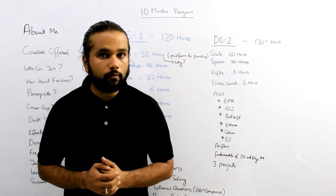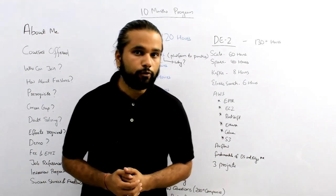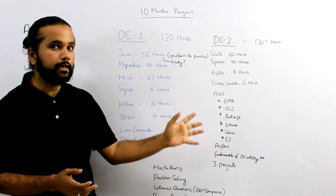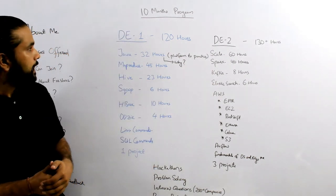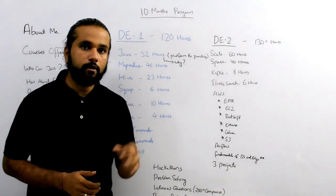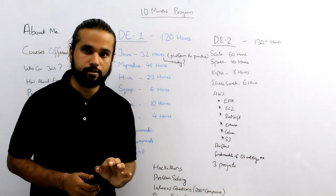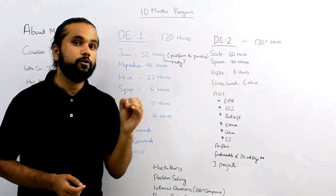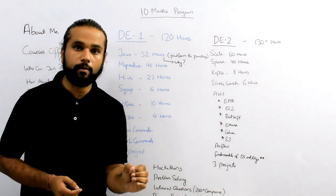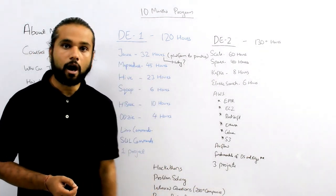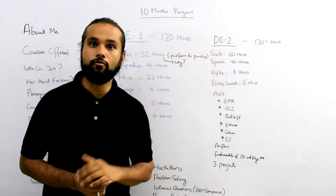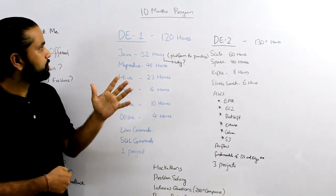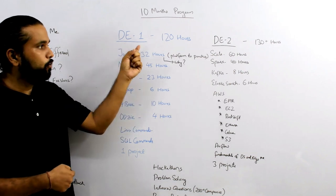Let me explain the program we have for you. We have an exclusive 10 months program, and you won't find this anywhere else. Our 10 month program is designed so that even someone with no programming experience can master data engineering. It could take around 250 hours. We've divided this course into two parts: data engineering one and data engineering two.